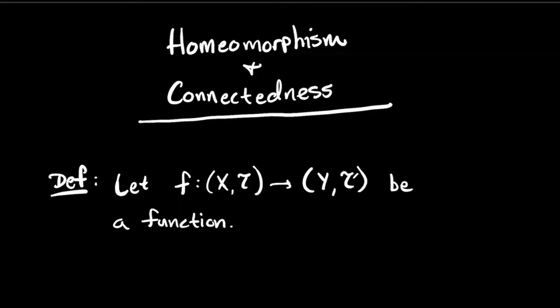So the first thing, let's say you've got a function between two topological spaces, X whose topology is T, and let's say Y is a set that has topology T prime. We're going to say that this function F is a homeomorphism if two things happen.